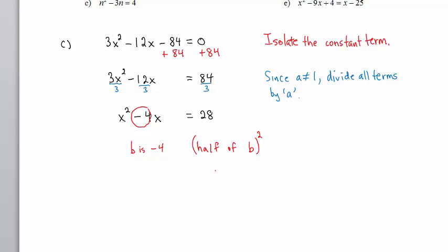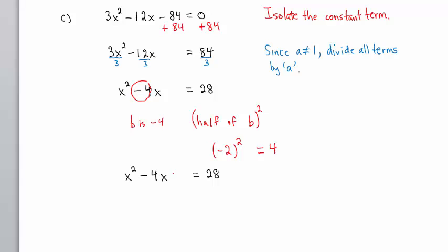Now, half of b is half of negative 4, that's negative 2. We will square negative 2 and add that to both sides of the equation. So we will add 4 to both sides of the equation.